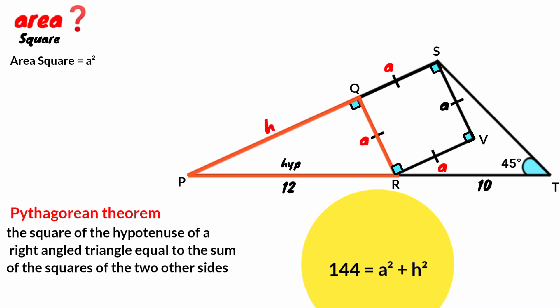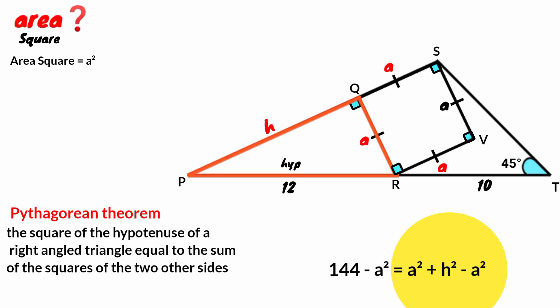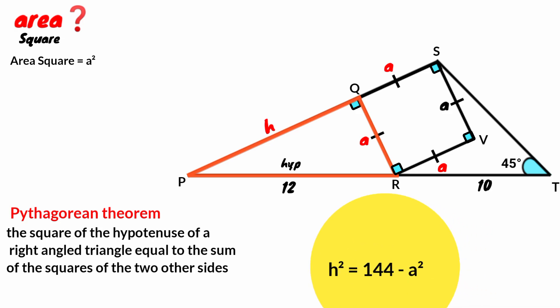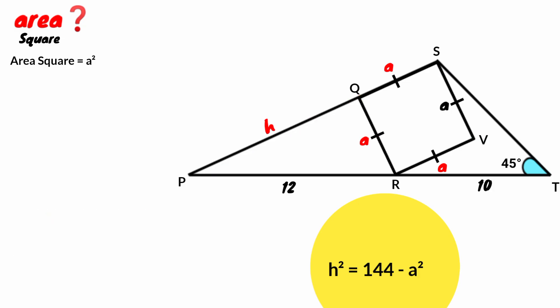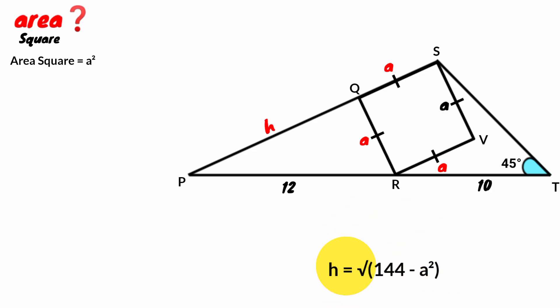12 squared is 144. Subtract A squared from both sides of the equation — A squared minus A squared is 0, so H squared equal to 144 minus A squared. Take the square root of both sides: square root of H squared is H, so H equal to square root of 144 minus A squared.